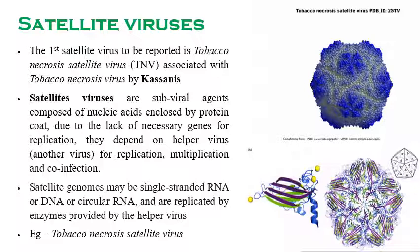The satellite virus genome is composed of single-stranded RNA or DNA, or circular RNA. They are replicated by the enzymes produced by the helper virus, since they lack the necessary genes for replication and other mechanisms.